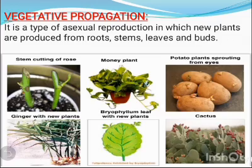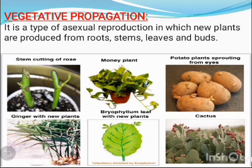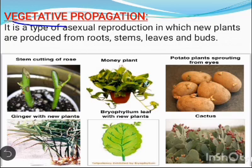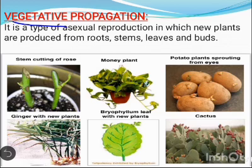Firstly, we will discuss about vegetative propagation. As the name suggests, this is the type of reproduction that takes place with the help of the vegetative part of a plant. Vegetative propagation can produce identical offspring. Vegetative propagation can take place naturally and can also be carried out by artificial means.